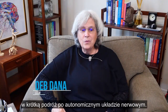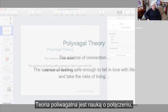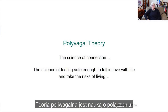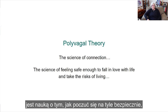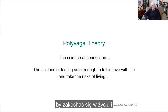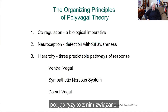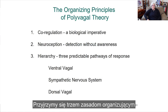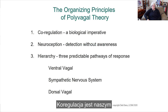I'm Deb Dana, and I'm going to take you on a brief tour of the autonomic nervous system. Polyvagal theory is the science of connection, or what I like to call the science of feeling safe enough to fall in love with life and take the risks of living. We're going to look at the three organizing principles of polyvagal theory: co-regulation, neuroception, and hierarchy.